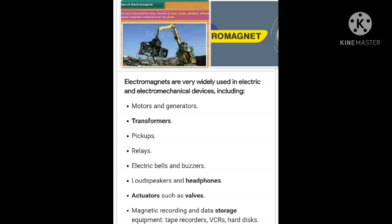Let us see the places where we can use electromagnets: motors and generators, transformers, pickups, relays, electric bells and buzzers, and yes of course loudspeakers and headphones which you are using nowadays. These are all places where electromagnets can be used.